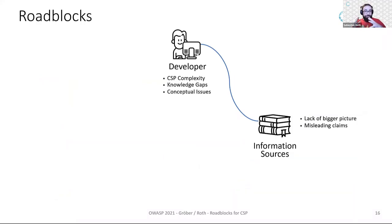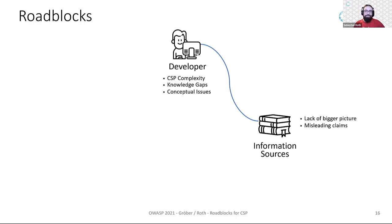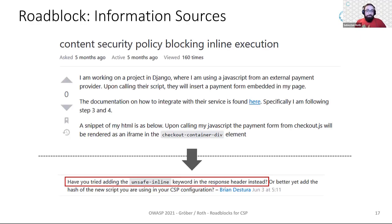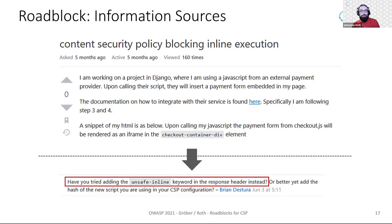Getting back to our average developer: due to knowledge gaps, they might start an online search to find more information about XSS attacks and how to build a proper CSP, or search for a specific error message displayed in the development console. However, resources available online often lack the bigger picture of the underlying issue. In the worst case, the developer finds misleading claims or receives wrong suggestions for fixing a problem, as shown in this Stack Overflow screenshot.